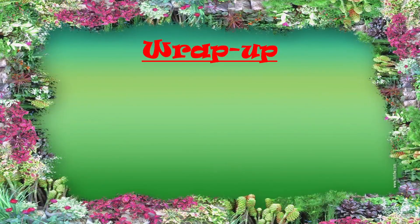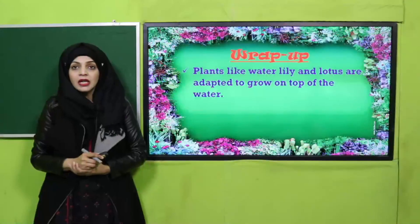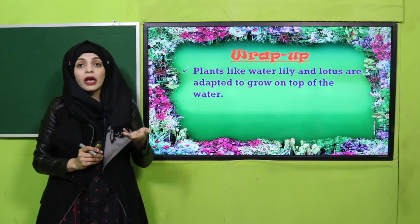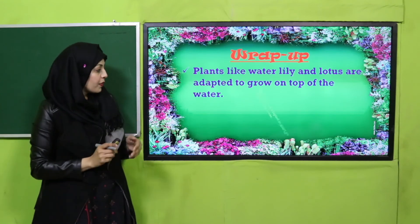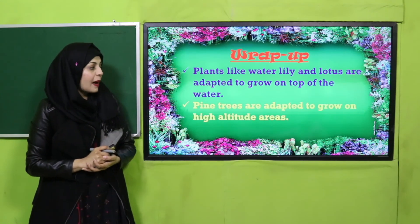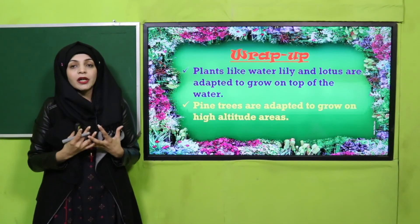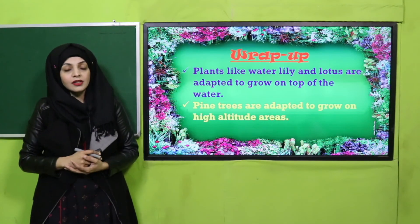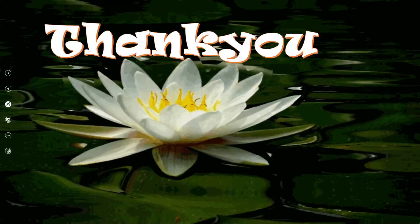Wrap up: plants like water lily and lotus are adapted to grow on top of the water — they float on the water surface. Pine trees are adapted to grow on high altitude areas — no matter how cold or snowy, pine trees are well adapted to grow on high altitudes. I hope you enjoyed your lecture. Keep everyone around you safe, have a good day, and Allah Hafiz.